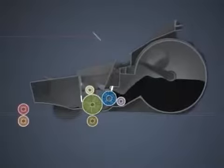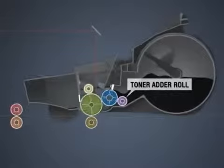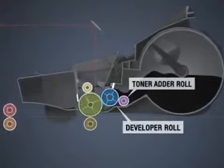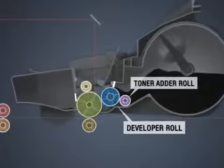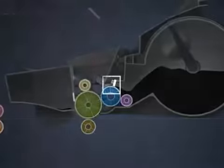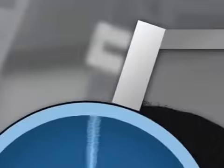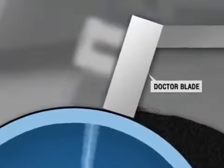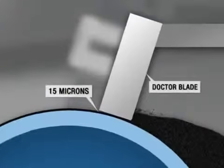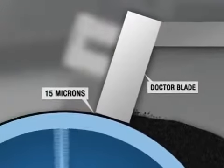Next, the image is developed. The toner adder roll coats the developer roll with toner, while electrostatically charging the particles. As the toner is placed on the developer roll, a leveling device called a doctor blade evens the toner to a thickness of approximately 15 microns, just slightly thicker than a strand of silk.